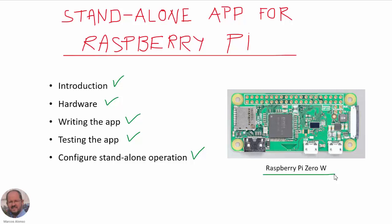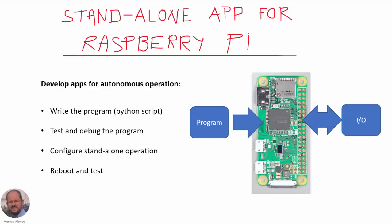This can also be done on any other model of the Raspberry Pi. Our goal here is to put the Raspberry Pi to work in a standalone fashion, so it is going to execute the program we are going to develop in a similar way as we would do with a microcontroller board. However, the Raspberry Pi is not a microcontroller board — it is a microcomputer board, so we have an operating system inside our board.